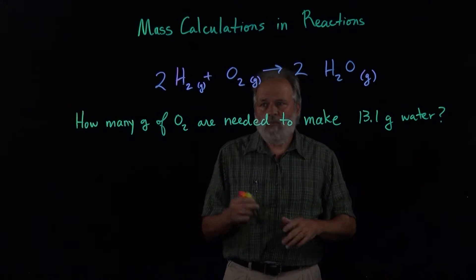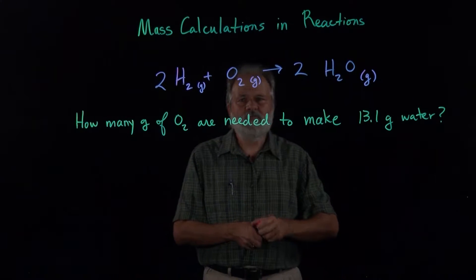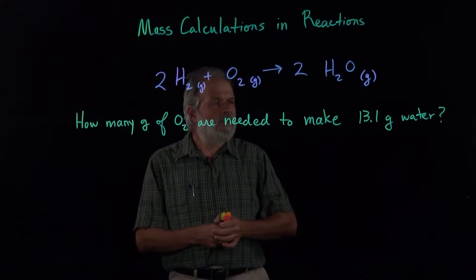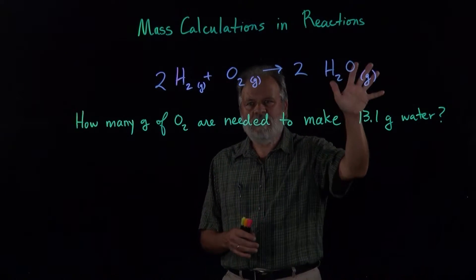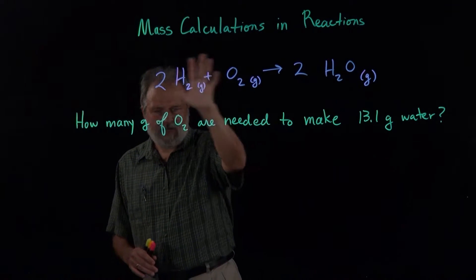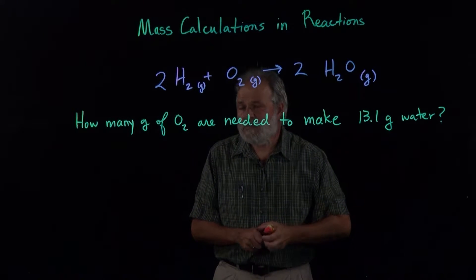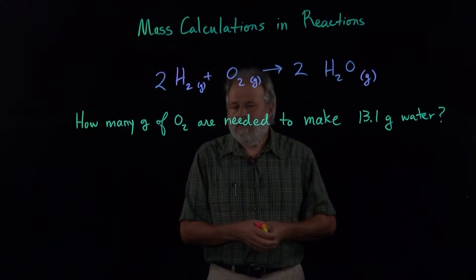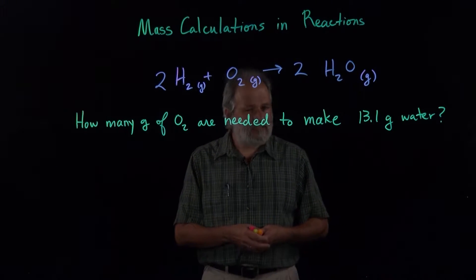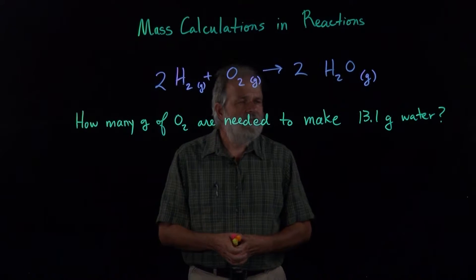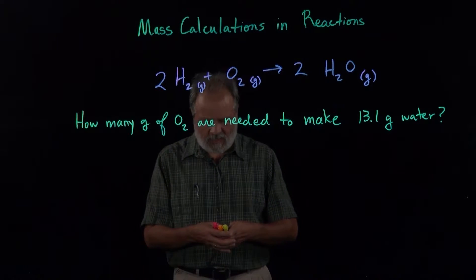So this is a combination reaction, so we know that if we have 13.1 grams on this side, the total of everybody over here has got to be 13.1 grams. So we already have a range that the amount of oxygen has to be less than 13.1 grams. So we'll just check that when we get done.